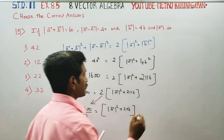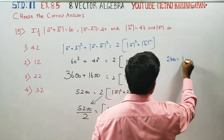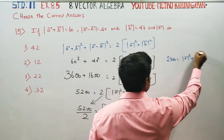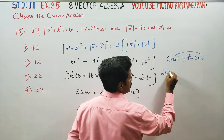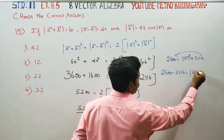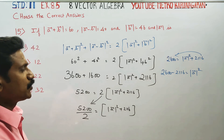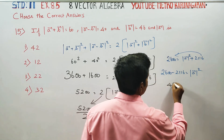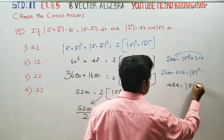Dividing 5200 by 2 gives 2600, which is equal to magnitude of A square plus 2116. Then, 2600 minus 2116 is equal to magnitude of A vector whole square, giving us 484 is equal to magnitude of A square.